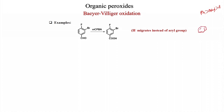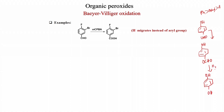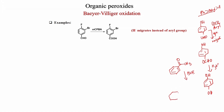However, with another compound where there are no electron-withdrawing groups on the aryl ring, the aryl group migrates and you get the corresponding product. Similarly, if you use acetophenone in Baeyer-Villiger oxidation, phenyl migrates more than the alkyl group, so the phenyl group migrates and you get phenyl acetate.